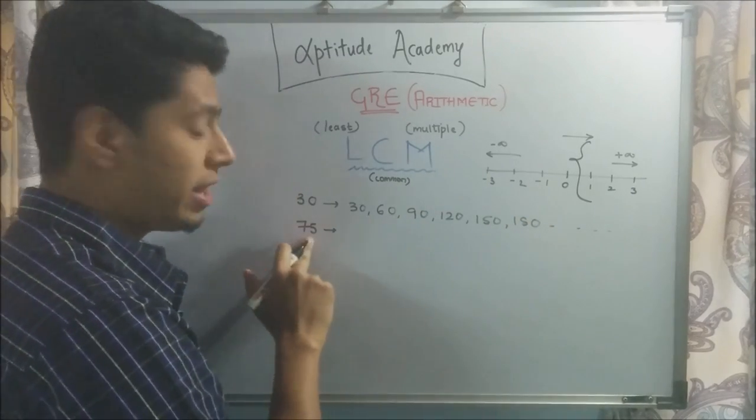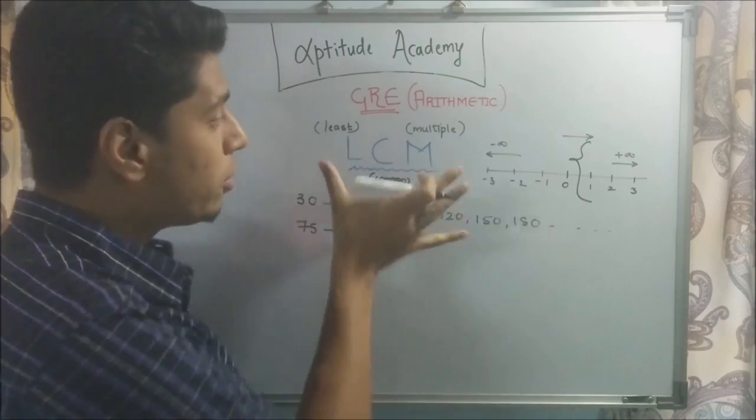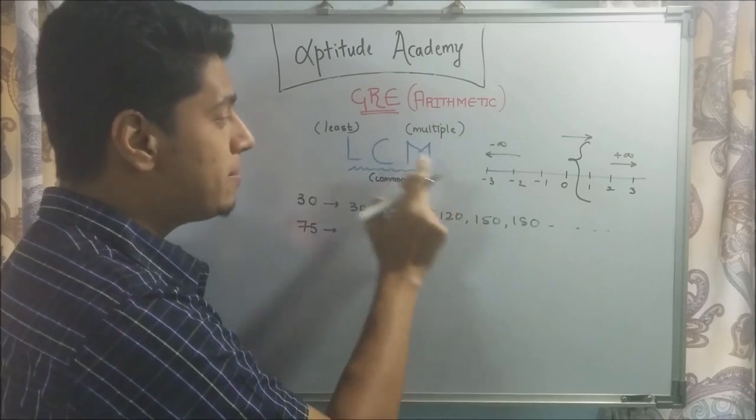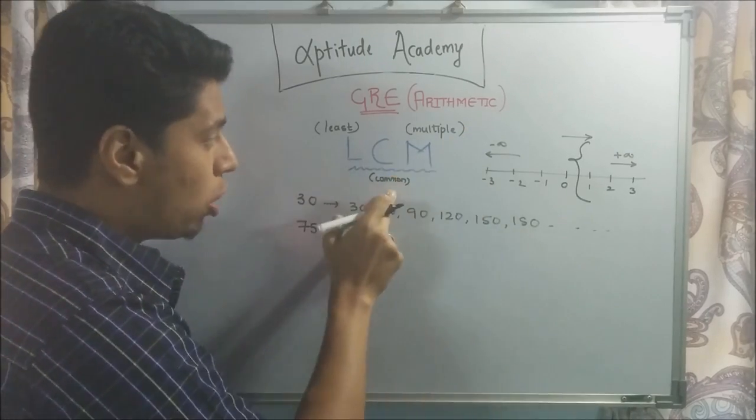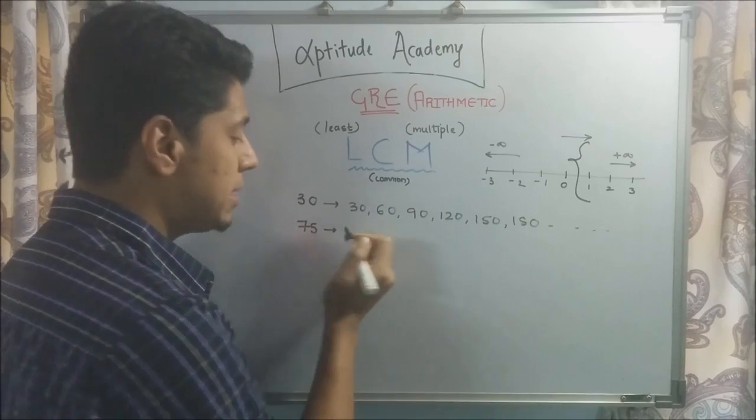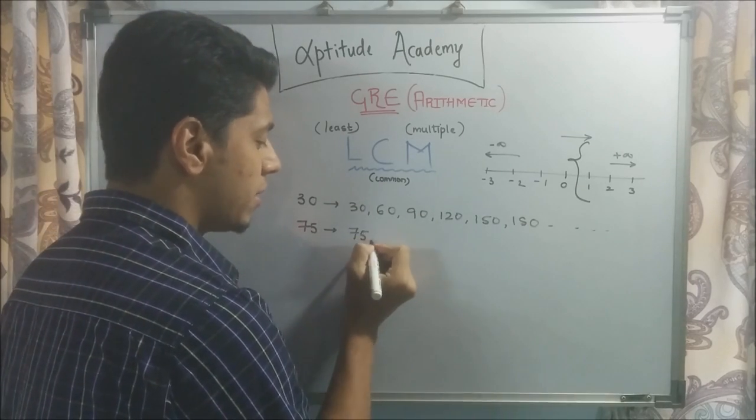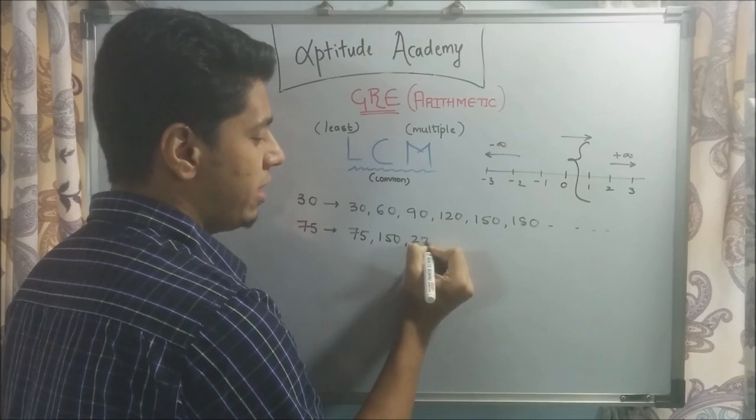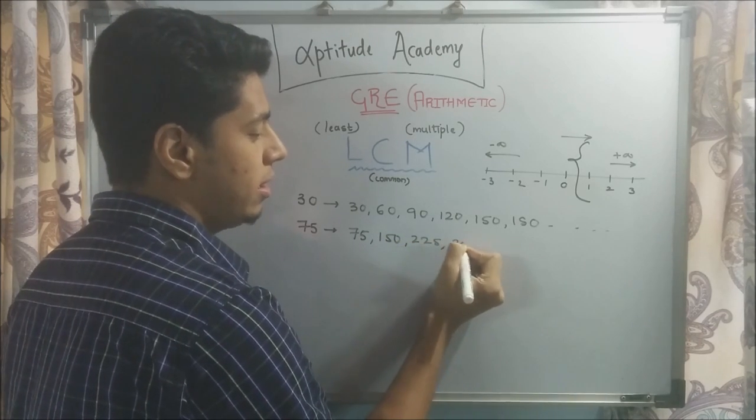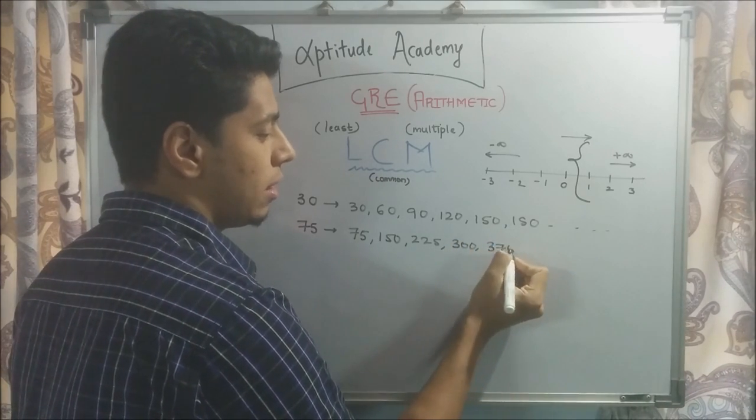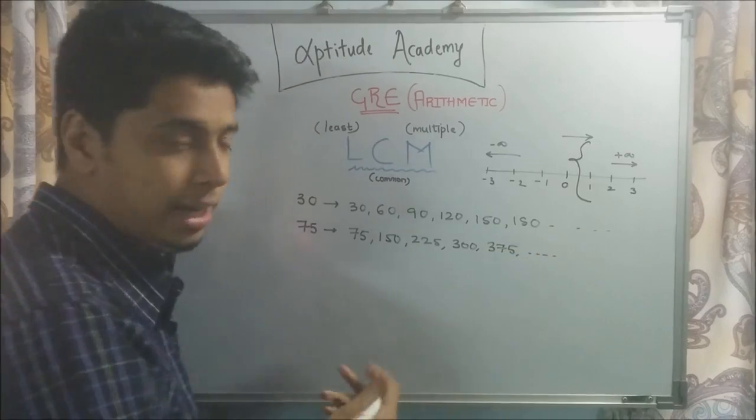Now I'm going to write the multiples for 75. We're going to explain LCM in reverse order. We're going to do MCL - multiple, common, and least. So first write down all the multiples. 75 multiples: 75, 150, 225, 300, 375, and so on and so forth.